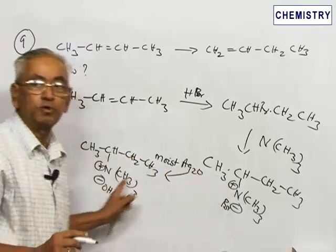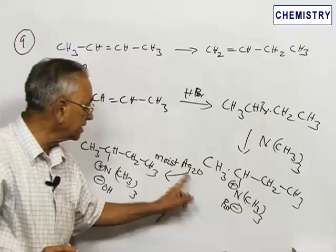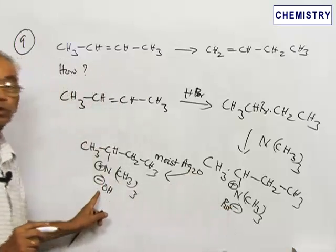The difference between these two compounds is the role of moist silver oxide is to convert this Br- to OH-.